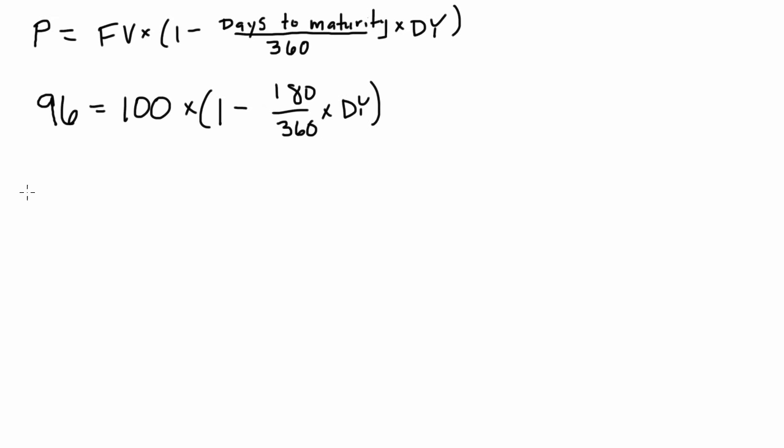So there needs to be a little bit of algebra. And so moving this 100 to the other side, we've got 0.96 is equal to 1 minus 180 over 360 multiplied by the discount yield, which is what we're trying to solve for. So a little bit more algebra, and we can find the discount yield.